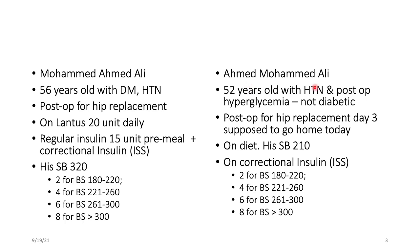The second patient, Mohamed Ahmed Ali, 52 years old, hypertensive, postoperative hyperglycemia. He is not diabetic. He also had a hip replacement and is supposed to go home today. His sugar was 210 and he is supposed to take two units of insulin. Unfortunately, a nurse gave him 23 units of insulin instead.